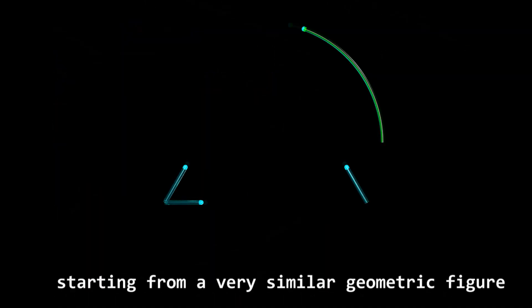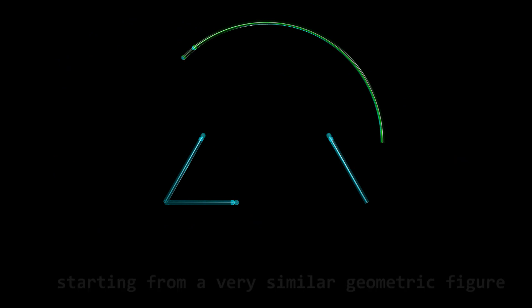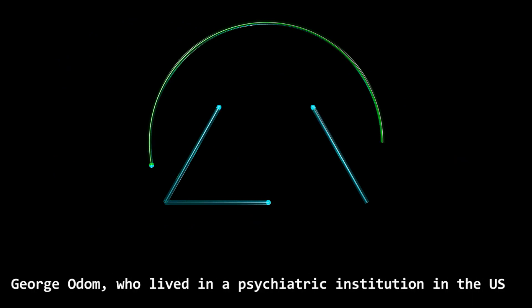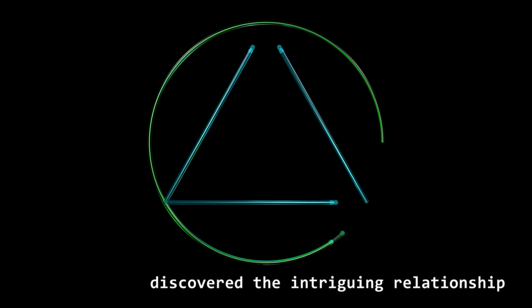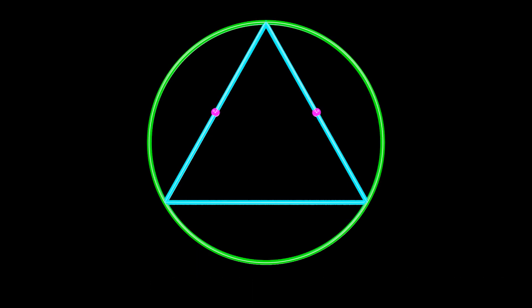Centuries later, in last century's 80s, starting from a very similar geometric figure, George Odom, who lived in a psychiatric institution in the US, discovered the intriguing relationship between the equilateral triangle and its circumference.